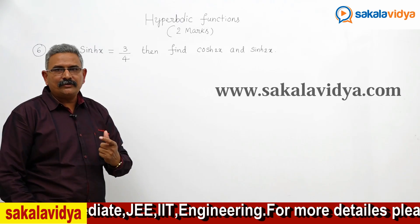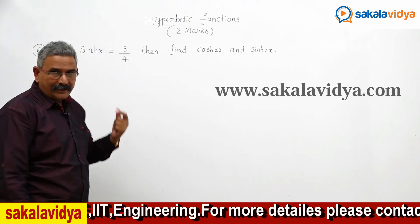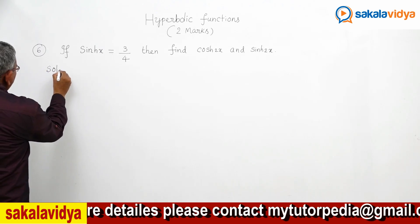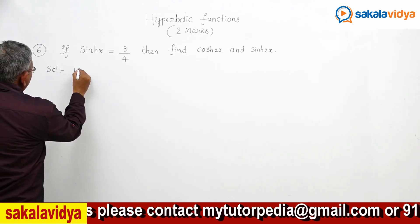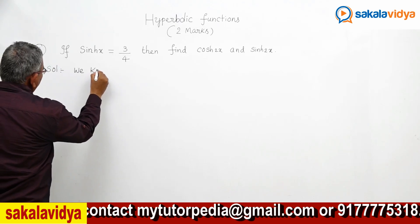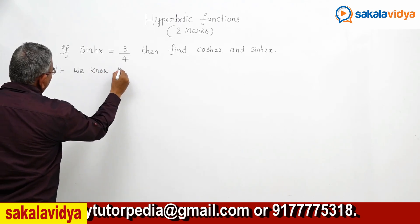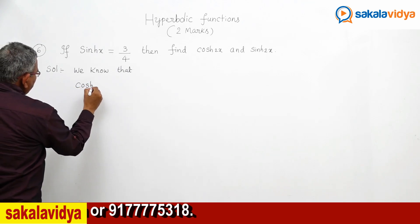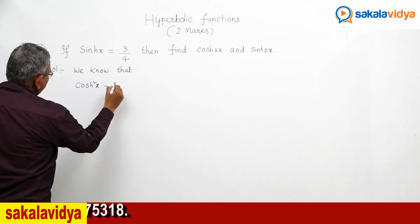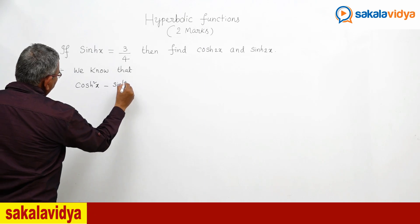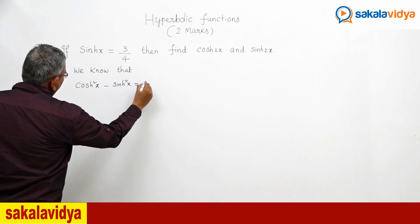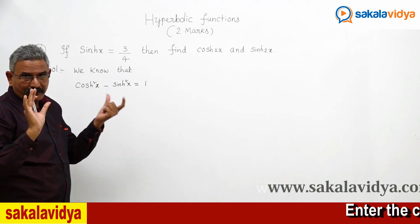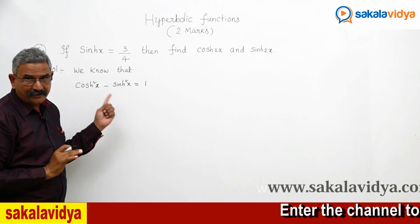First let us find out the cosh(x) value. To find cosh(x), we need to recall that we know cosh²(x) minus sinh²(x) equals 1. You need not actually commit this to memory — it is an already established fact.